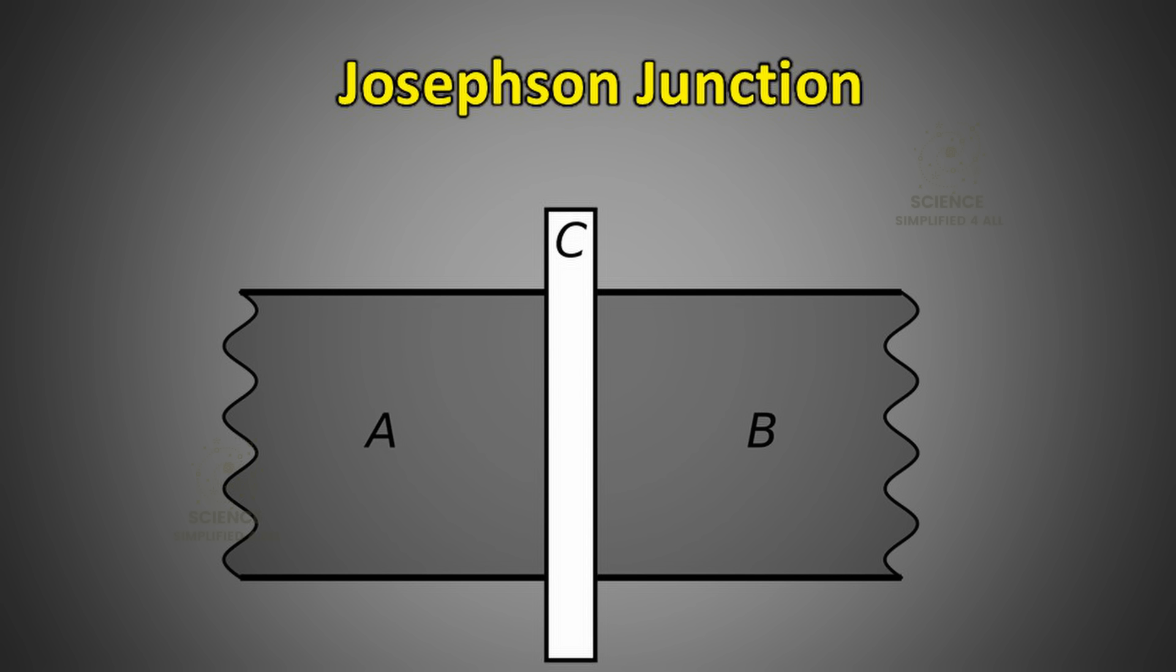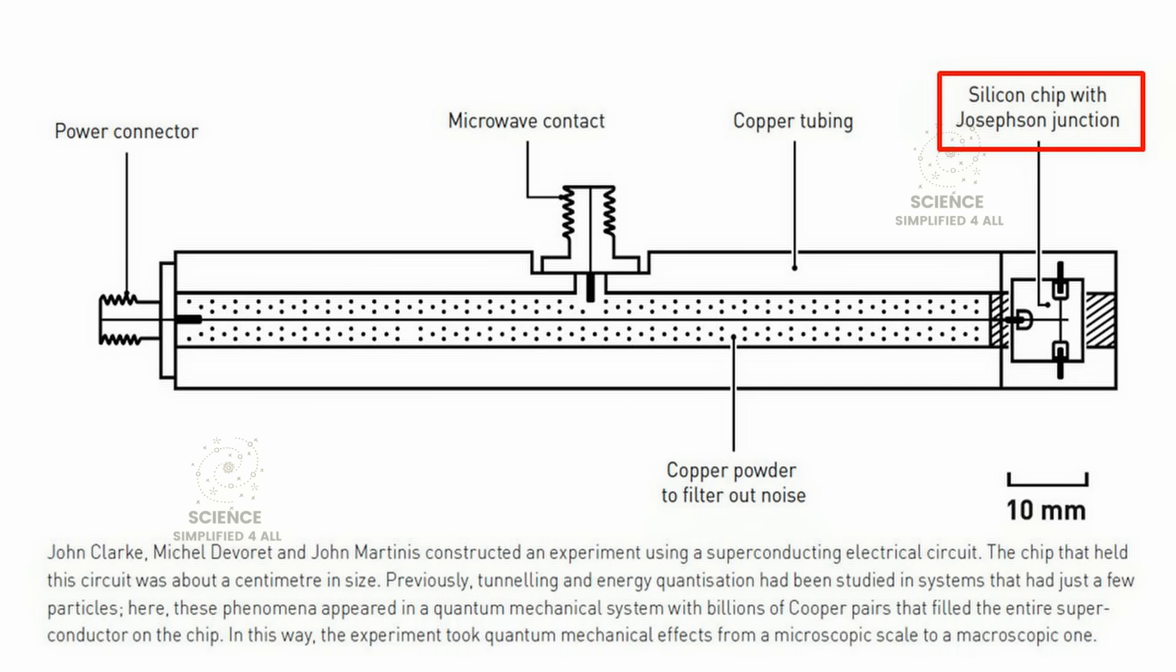This quantum tunneling current was first proposed by the physicist Brian Josephson, and the phenomenon is now known as the Josephson effect. The device formed by such a setup is called a Josephson junction. For this groundbreaking discovery, Brian Josephson was awarded the Nobel Prize in Physics in 1973. One of the key components used in the experiments that won this year's Nobel Prize is the Josephson junction itself.